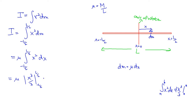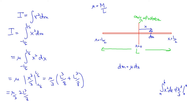Taking 1/3 outside the bracket: (L/2)³ = L³/8. For the lower limit, (-L/2)³ = -L³/8, and subtracting a negative gives a plus, so we get 2 × L³/8. This gives μ/3 × (L³/4) = μL³/12. Substituting μ = M/L gives ML²/12.